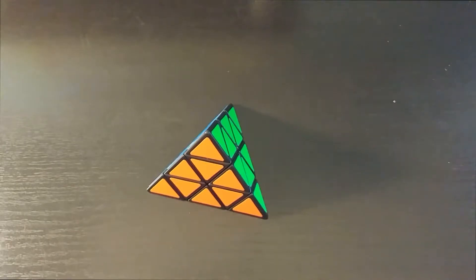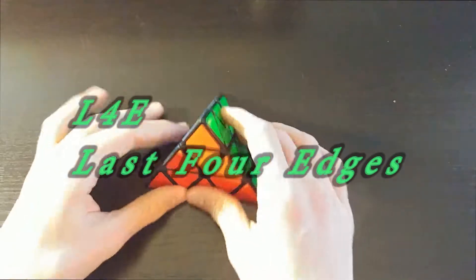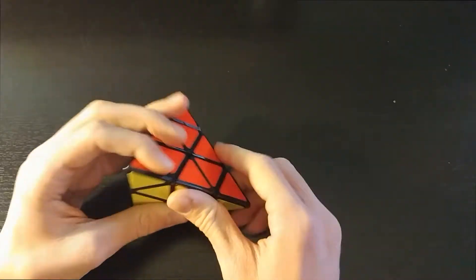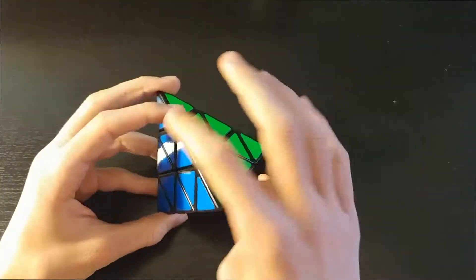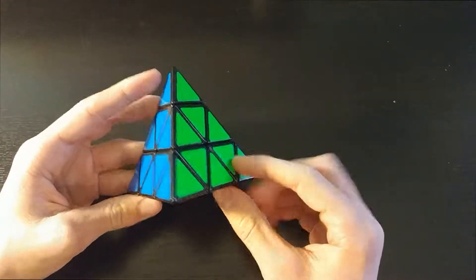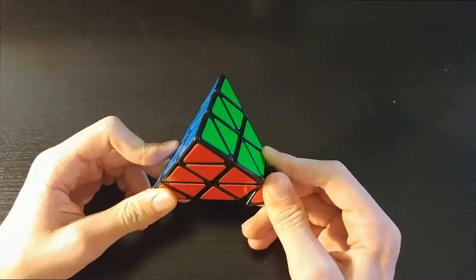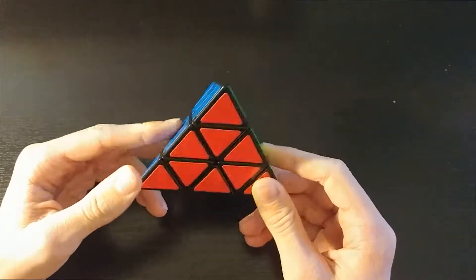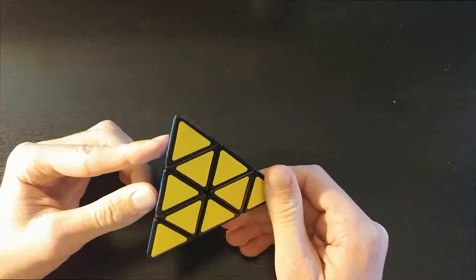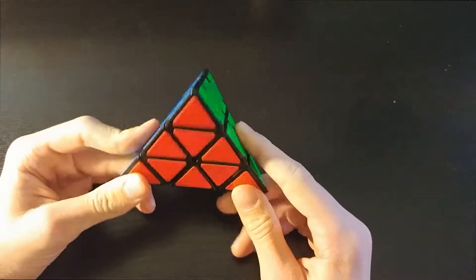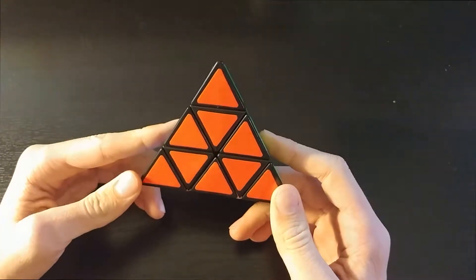Hey guys, this is a tutorial on how to solve the Pyraminx with one algorithm. This is kind of a beginnerized version of L4E, so you're going to start by building a V and then doing something like last four edges, but it's a lot simpler than that explanation might make it seem. With some practice, you should be able to get around sub-10 with this method, but you only need to learn one algorithm, and it's pretty simple, you'll catch on really quick.